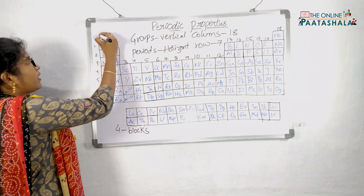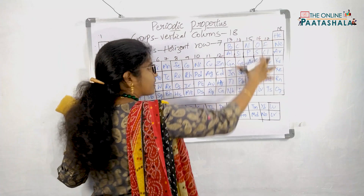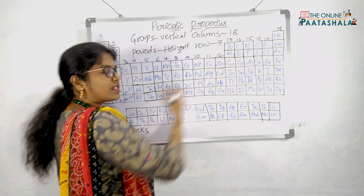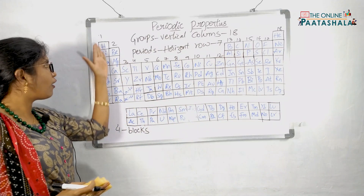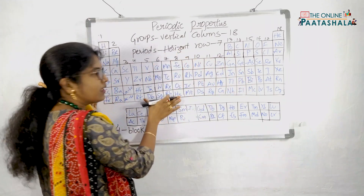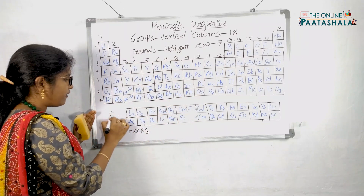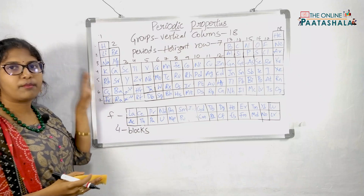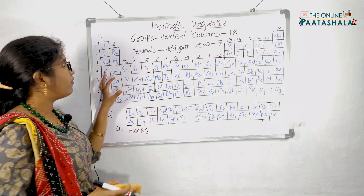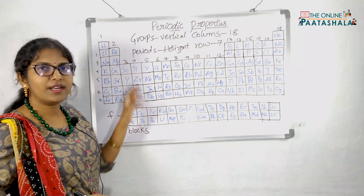The left side of the periodic table is called s block elements. The right side of the periodic table is called p block elements. In between s and p, you have d block elements, and below s, p, and d you have f block elements. We will go through brief information of the s, p, d, and f blocks, and what is present in the groups and periods.